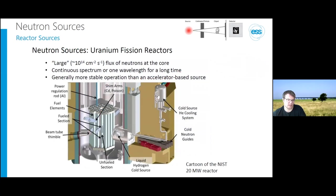Inside a reactor, there are fuel rods and control rods. For imaging, what matters is that there is a moderator that slows neutrons down to energies useful for scattering and imaging. You will also often see the term 'cold source,' which is a special moderator to slow neutrons down to the cold spectrum. The beam is then typically transported in neutron guides to avoid losing neutrons along the way.